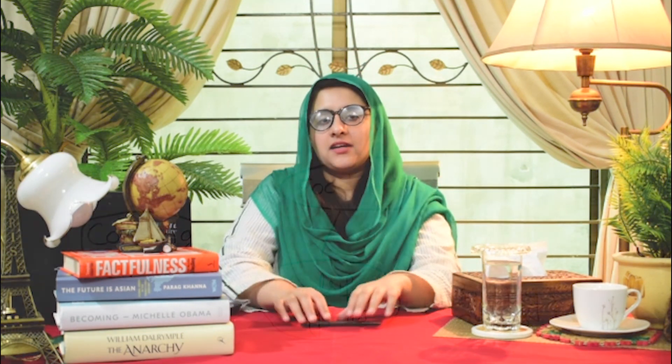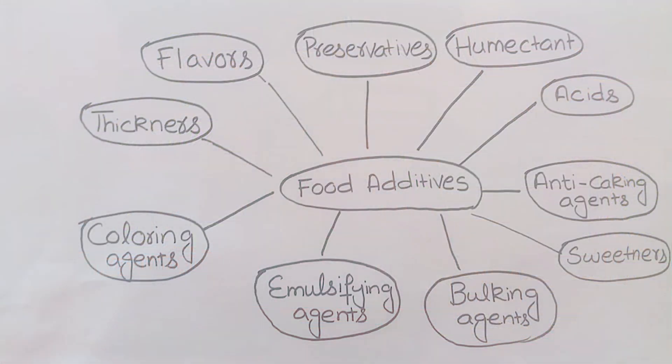Now we will see which substances are called food additives, which are available in the market, what their functions are, what their different forms are, and what their examples are. First of all, we will look at Acids. We will look at their chart.